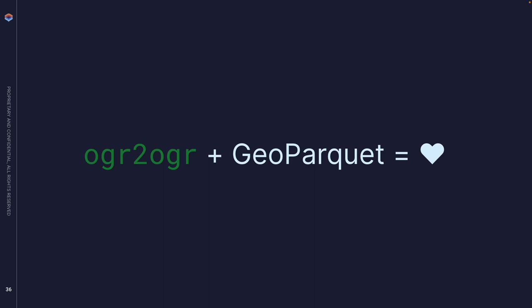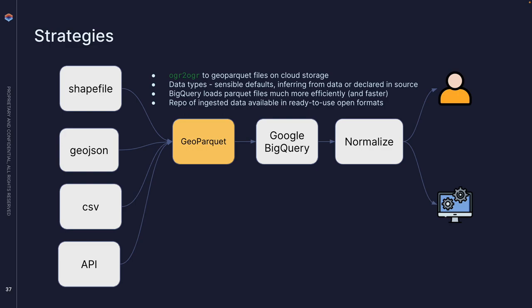The basic strategy: OGR2OGR converts any of these formats into GeoParquet files stored in cloud storage. Parquet is great for data types — it's my personal favorite, with sensible defaults, inferring from data or declared directly in source. BigQuery loads Parquet files much more efficiently. At the same time, we have a repo of ingested data existing in cloud storage in ready-to-use open formats.